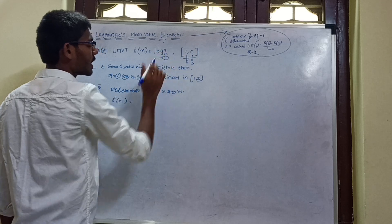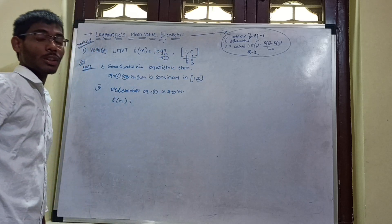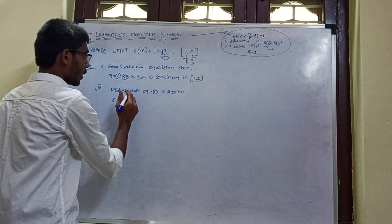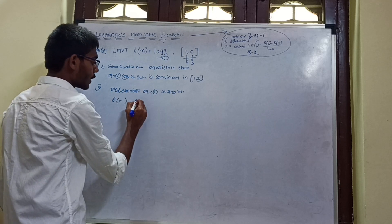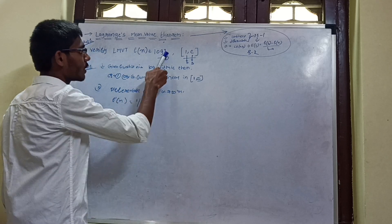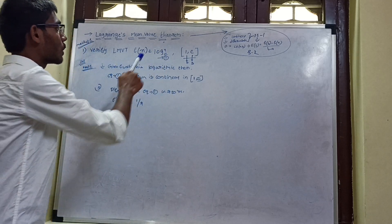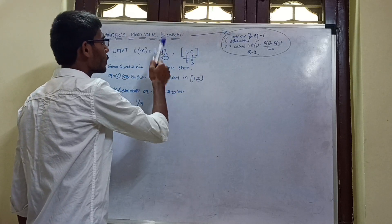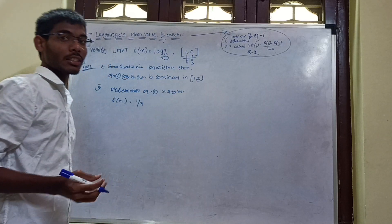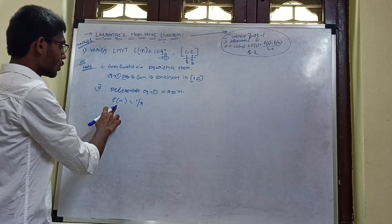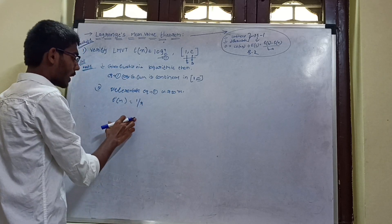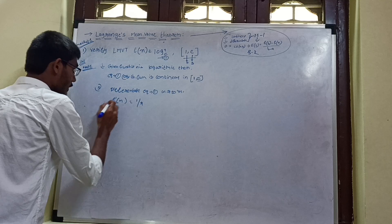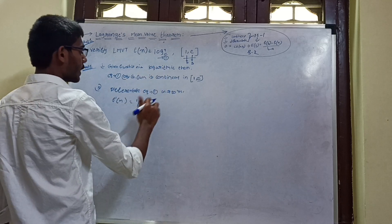So f'(x) = 1/x. Since log x has base e, and it is an exponential log in this interval, the differentiation of log x gives us 1/x.